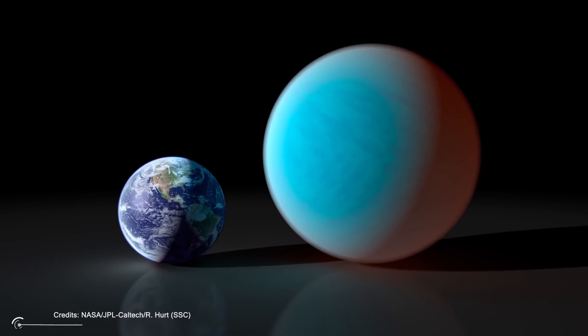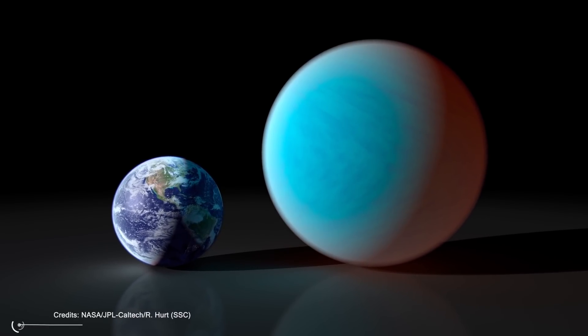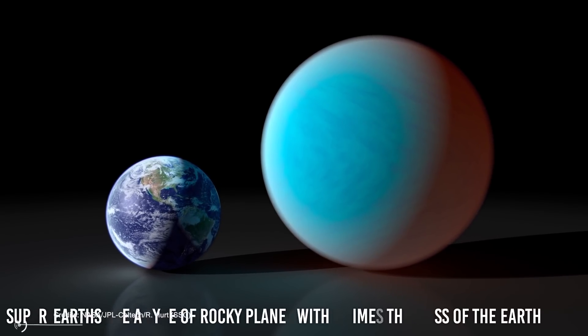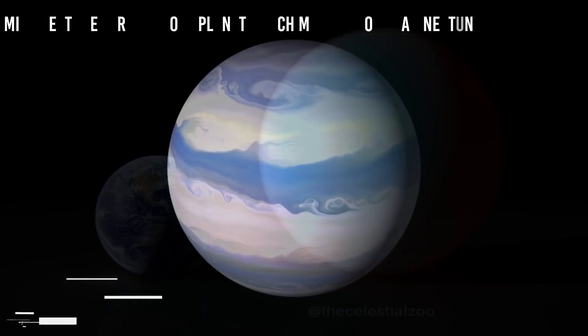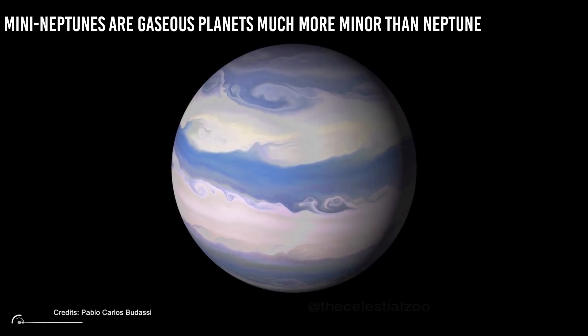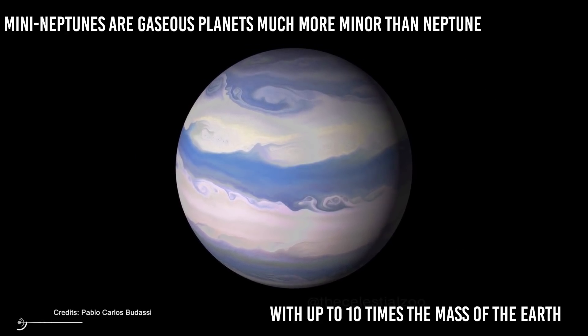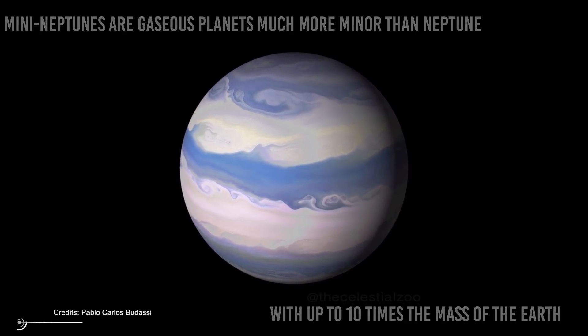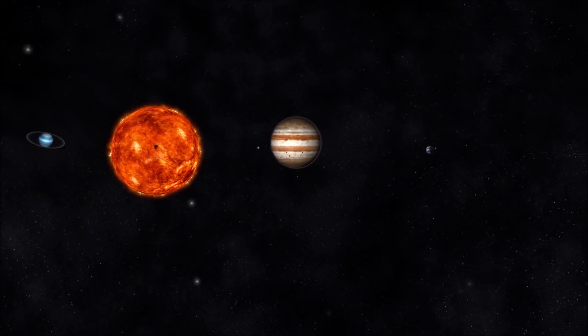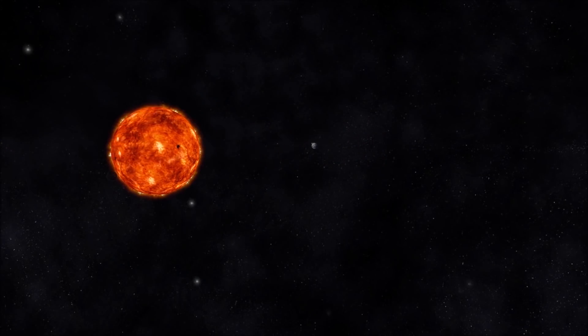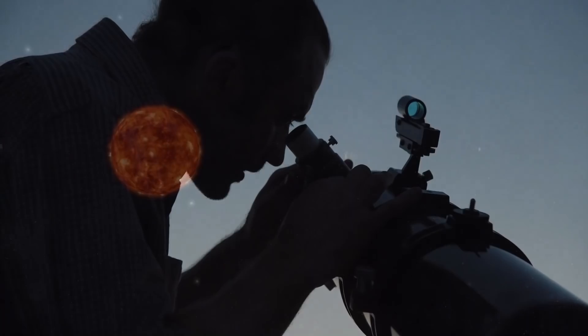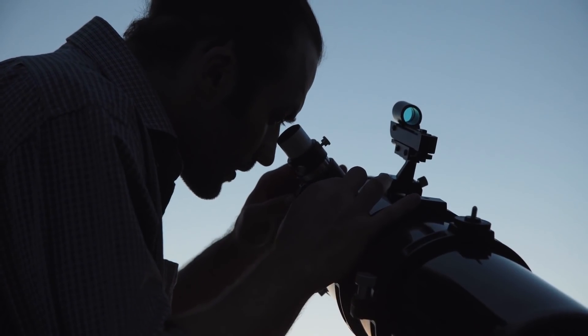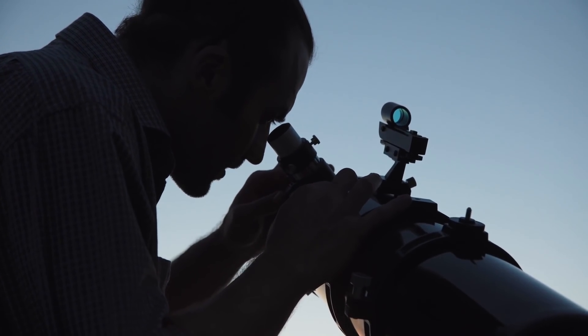The most common planets in the galaxy are known as super-Earths and mini-Neptunes. Super-Earths are a type of rocky planet with five times the mass of Earth, and mini-Neptunes are gaseous planets much smaller than Neptune with up to 10 times the mass of Earth. Those two types of planets are intermediate versions between the mini-rocky and gas giants that our solar system has, and are the most common in most solar systems we have discovered.